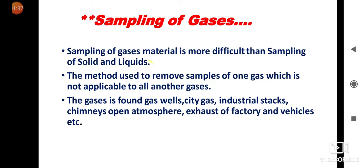Why is it difficult? Because it is a gas — it will be found anywhere. But in case of solid and liquid, it is a very easy one. The method used to remove samples of one gas is not applicable to all other gases. Gas is found in gas wells, city gases, industrial stacks, chimneys, open atmosphere, exhaust of factories and vehicles, etc.